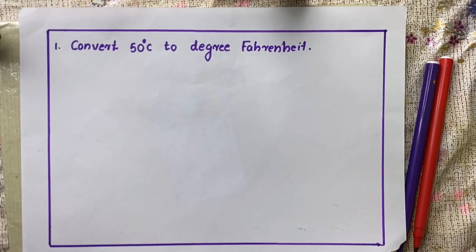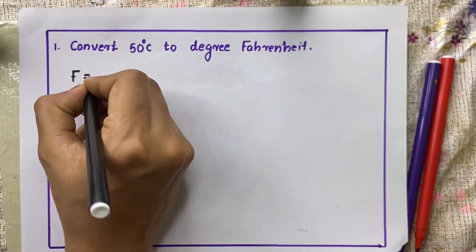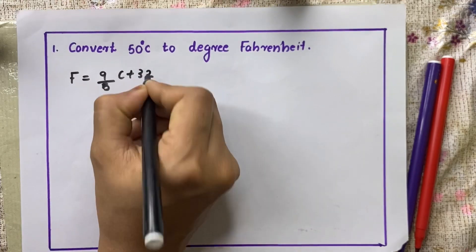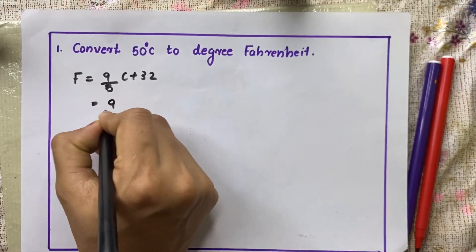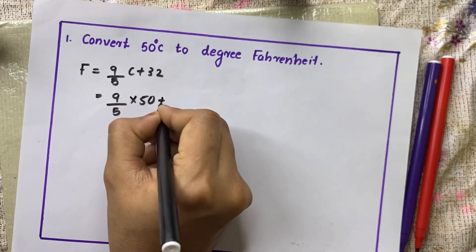Now we can move on to the third question. That is very very simple. Convert 50 degree Celsius to degree Fahrenheit. You can do that more quicker than me, can you try? F is equal to 9 by 5 C plus 32. I am applying the values, 9 by 5. Here what is C? 50 plus 32.